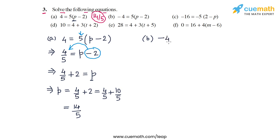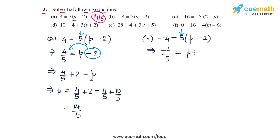Now let's do part b. The equation is -4 = 5 times (p minus 2). As the first step, we get rid of the 5 by dividing both sides by 5. On the LHS we get -4/5, and on the RHS we get p minus 2.